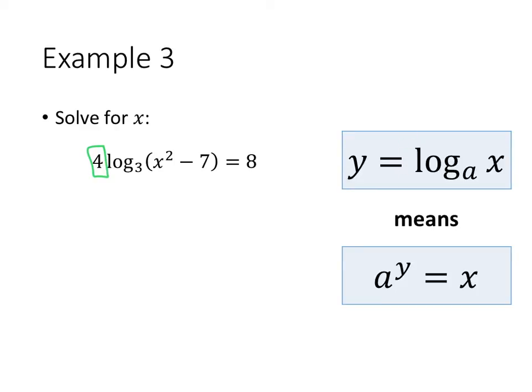It just has to be a log all by itself. So I've got to fix this equation. Before I can convert it, I've got to divide both sides by 4. So when I do that, I get the log base 3 of x squared minus 7 equals 8 divided by 4, which is 2.